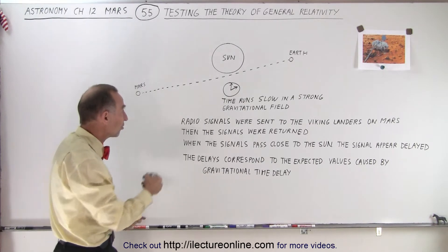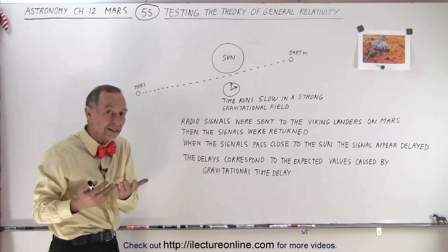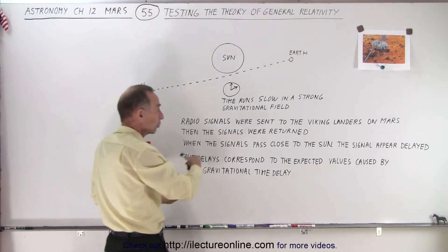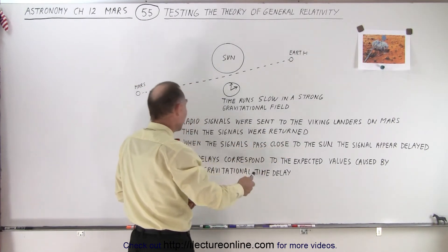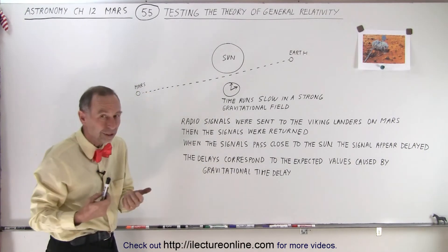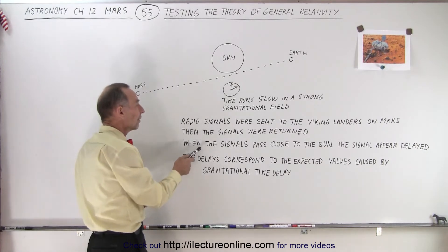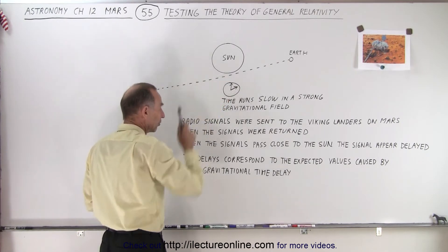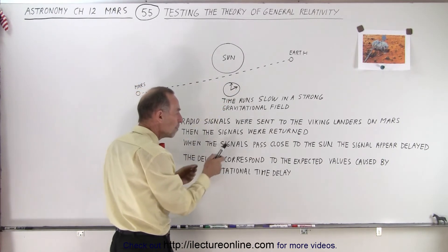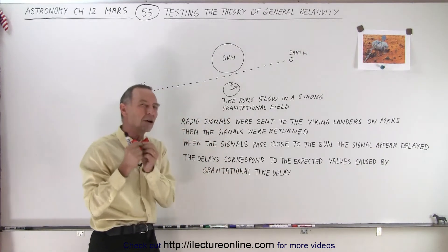When they're sent back and forth, that was the objective. Signals were sent from the Earth to the Viking landers on Mars, and then the signal was returned, and then they would compare the outgoing signal to the incoming signal.